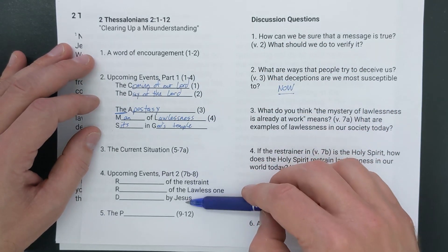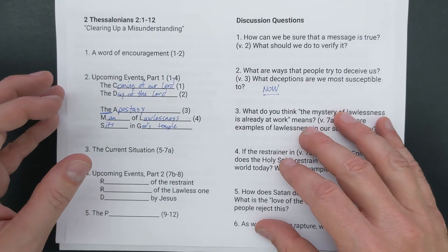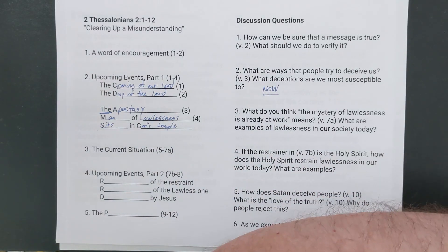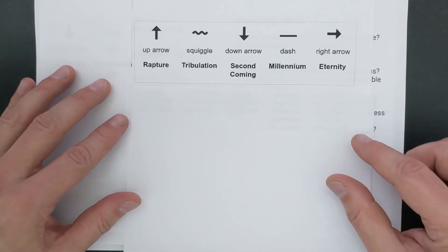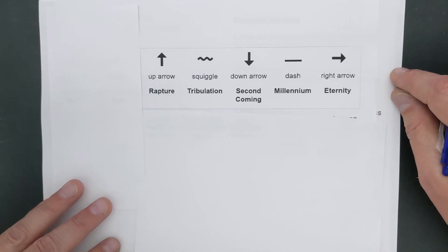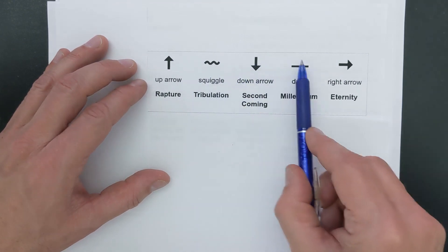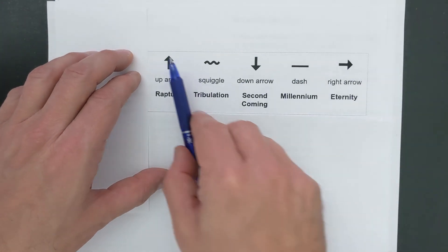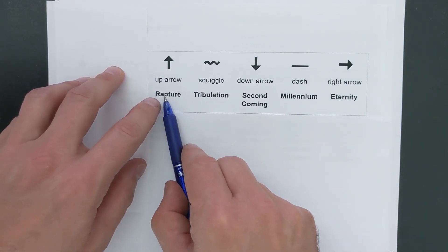We have a number of events described in this passage, so let's try to build a timeline of how all these things play out together. One overarching timeline that's been helpful is what our pastor calls 'three arrows and two lines' — three arrows: one up, one down, one to the right, and two lines: one squiggly and one dashed. This is a useful tool to understand the timeline of end times. Now, this does take a pre-tribulation view, because we have the rapture — Christ coming for his church — occurring before the tribulation.